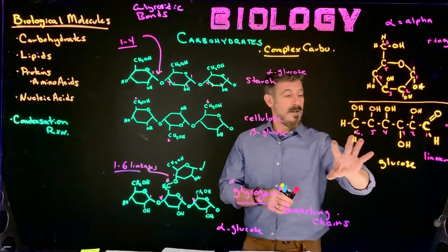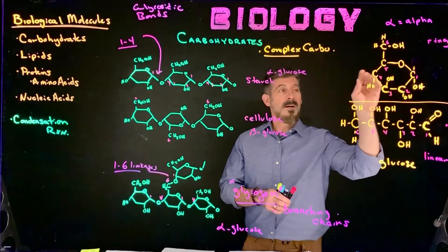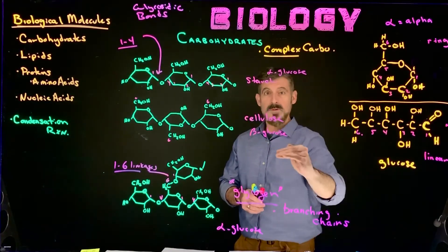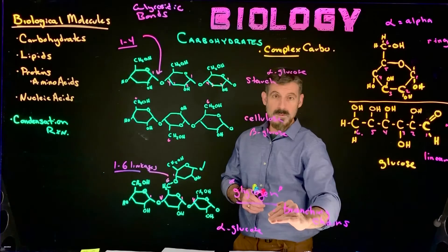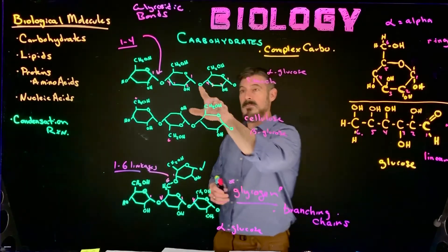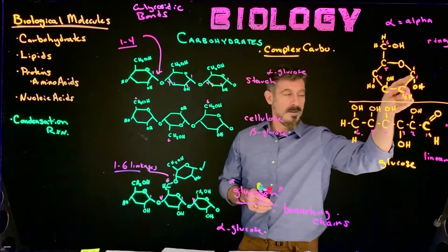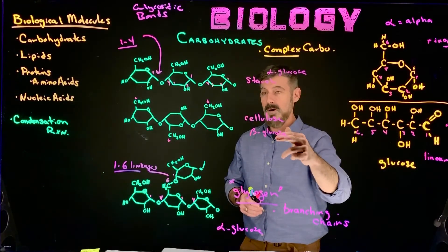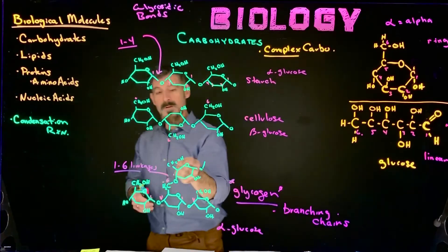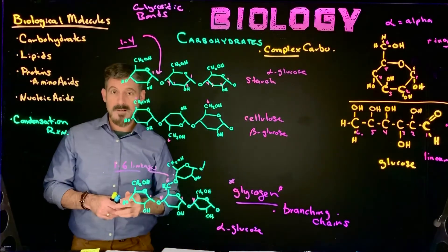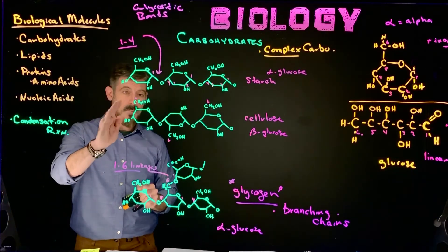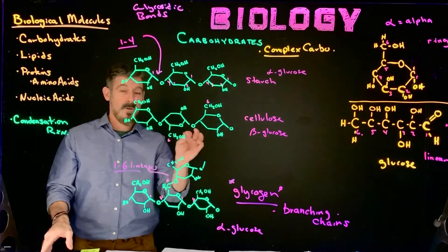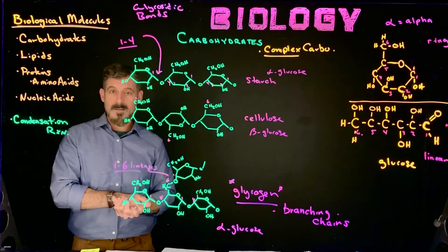So just be able to recognize the glucose molecule in its ring form, and then be able to recognize which one of these would be starch, which one would be cellulose, and which one would be glycogen. Be able to number the carbons, counting 1, 2, 3, 4, 5, 6, knowing that these have 1,4 bonds between the sugars, except when you have a branch, where you have a 1,6 linkage. You should focus on labeling them - not necessarily sketching them - but doing your own little sketches would make it easier in the future.